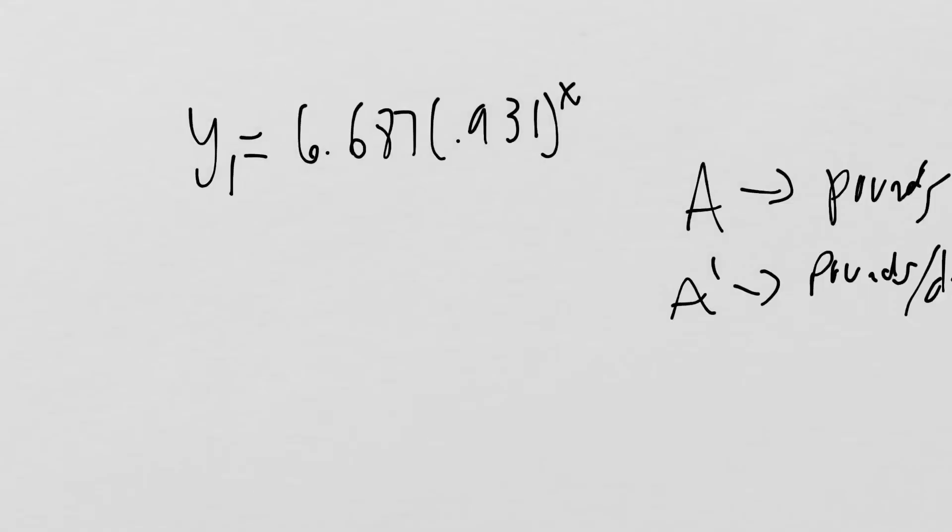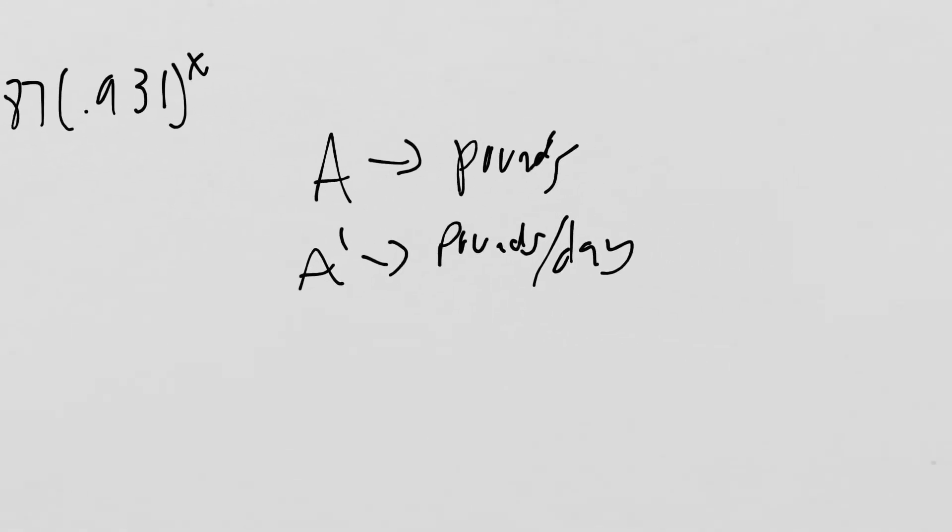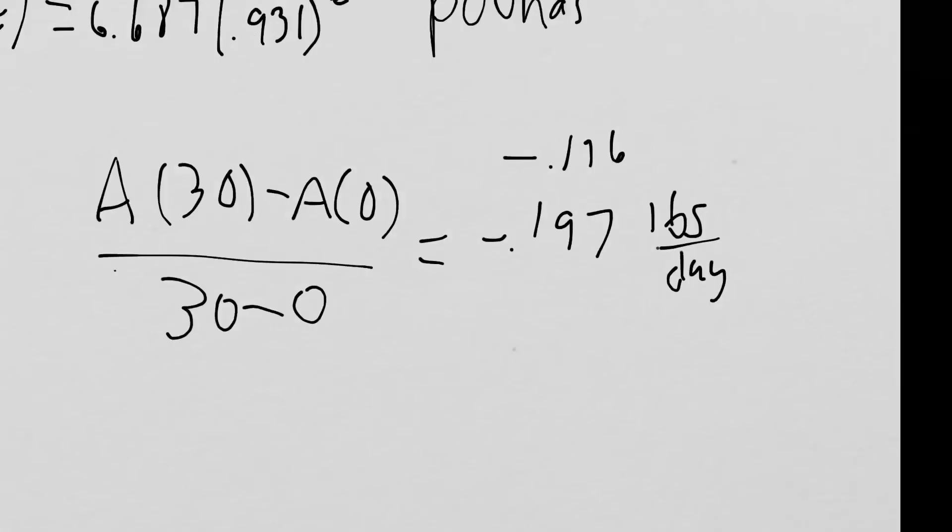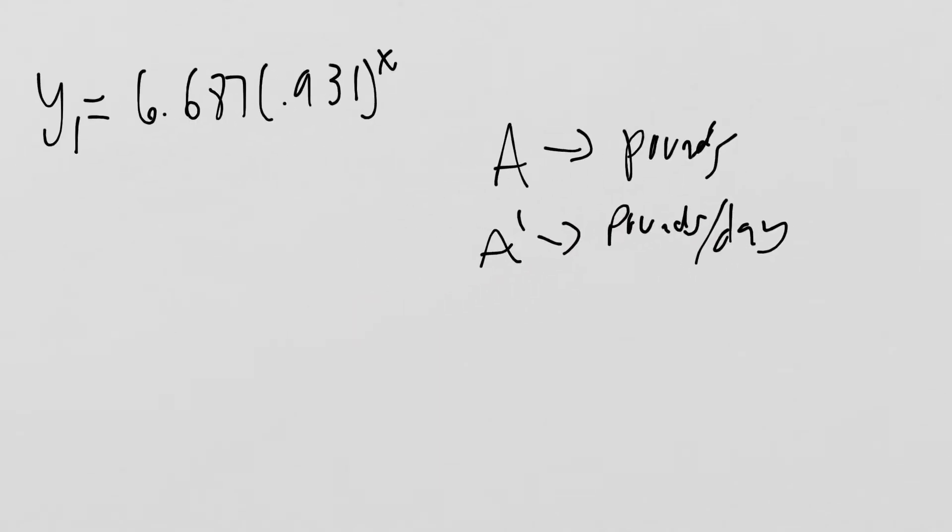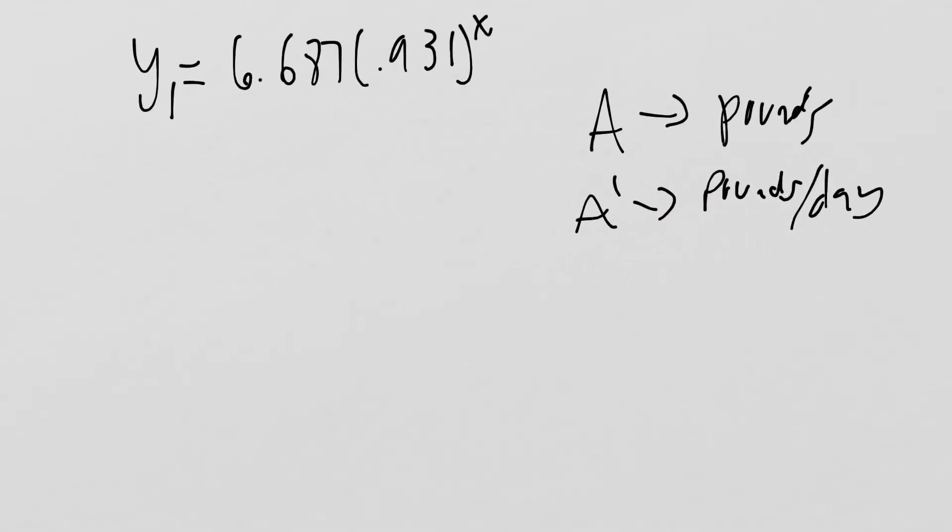Part B is asking for the derivative of our function, A'. I want to write units down. I know that A is in pounds. The derivative A' is going to be pounds per day. Remember, average rate of change is just a way of approximating a derivative, so that's pounds per day as well. All we need to do here to find A', and specifically we're looking for A'(15).